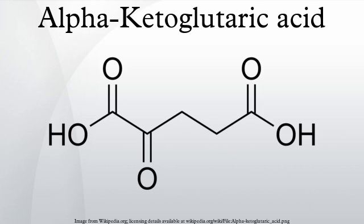Alpha-ketoglutaric acid is one of two ketone derivatives of glutaric acid. Its anion, alpha-ketoglutarate, is an important biological compound. It is the keto acid produced by deamination of glutamate, and is an intermediate in the Krebs cycle.